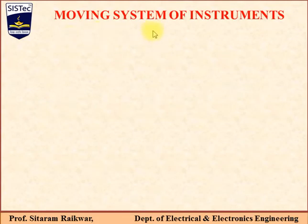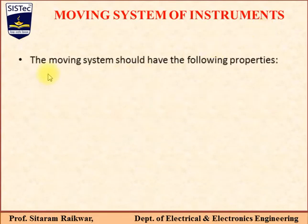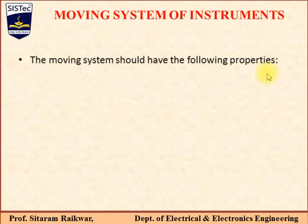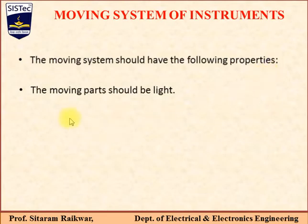Moving System of Instruments — the moving system should have the following properties. In analog instruments, to move the pointer, we require a moving system. Now the moving system has some properties which we are going to discuss here. The moving part should be light.